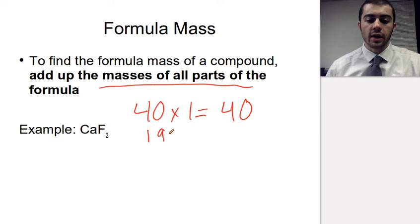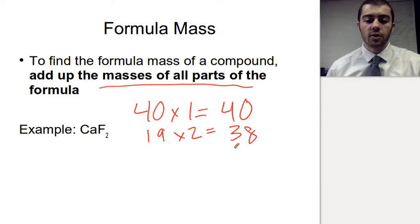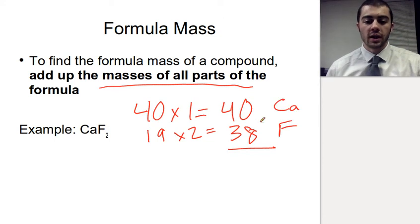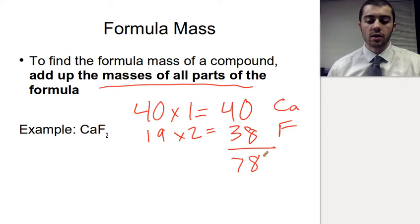Fluorine has a mass of 19. We have two of those, so fluorine contributes a total of 38 to the total mass of this compound. If we add up all the parts — the part that's calcium and the part that's fluorine — we get 78 for the formula mass.